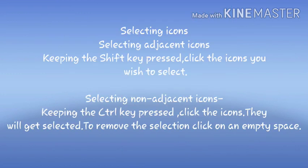Selecting icons: to select adjacent icons, keep the Shift key pressed and click the icons you wish to select. To select non-adjacent icons, keep the Ctrl key pressed and click the icons — they will get selected. To remove the selection, click on an empty space.